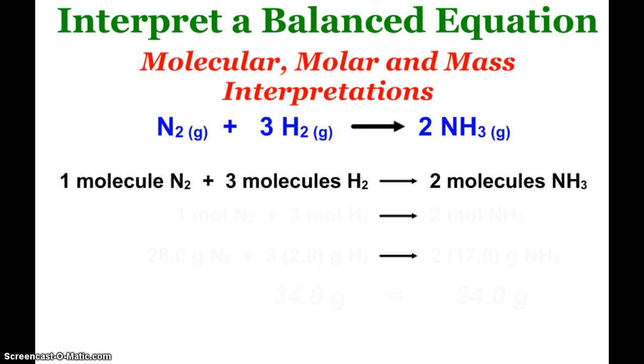And then of course, as we'll see here in a minute, the mole, our favorite unit in chemistry. I use the same coefficients, but I just talk about it on the molar level. One mole of nitrogen and three moles of hydrogen react to make two moles of ammonia.